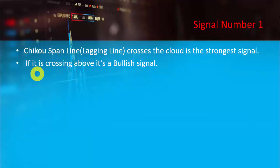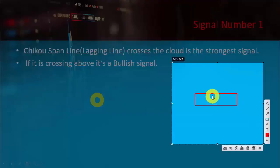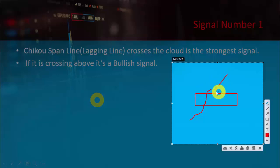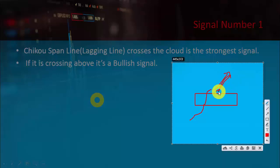The crossovers are of two types. If the Chikou Span is going to cross the cloud from the downward side toward the upward side — like here, where this line crosses upward — it means we are going toward the uptrend and a bullish trend. Whenever Chikou Span crosses the cloud from downward to upward, the trend is bullish and we get a buy signal.